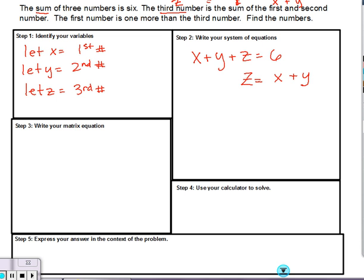So that was kind of weird. We need to move that x and y back over to the other side of the equation so we can get it all on the same side. What's the last one? The first number, which is x, is one more than the third number. z plus one. Very good.